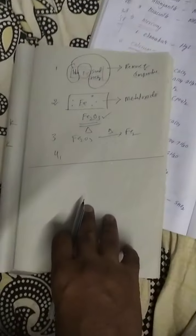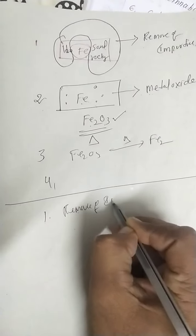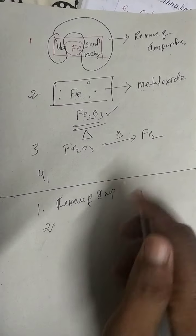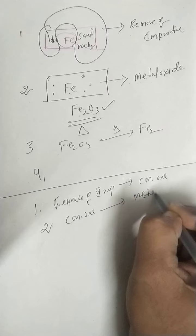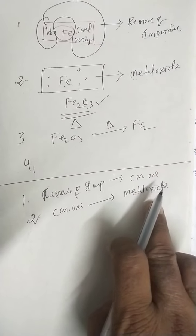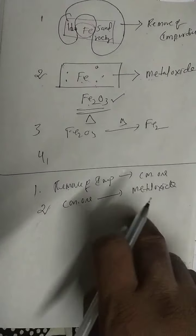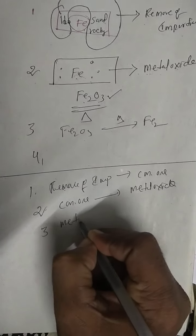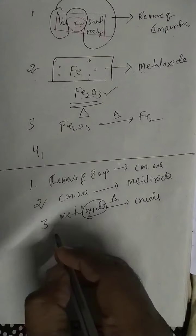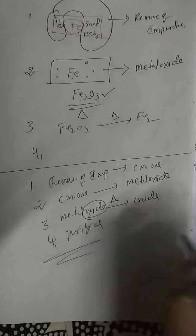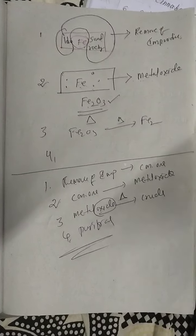To summarize the four steps: first, concentration of ore — removal of impurities. Second, concentrated ore converted into metal oxide — oxygen helps separate impurities by heating. Third, metal oxide converted into crude metal — oxygen is eliminated by heating. Fourth, purification methods. These four steps are involved in metallurgy. Next, we will go through each method very clearly.